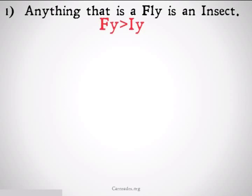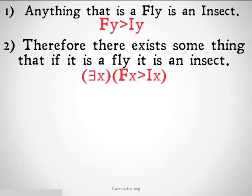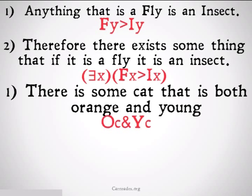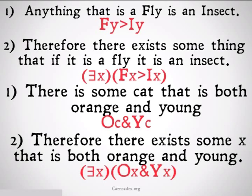Here are some more concrete examples. Anything that is a fly is an insect, therefore there exists something that if it is a fly is an insect. There's some cat that is both orange and young, therefore there exists some X that is both orange and young. Note that we've gone both from the general case and the specific case to the 'there exists something' case — you can do either with existential generalization.